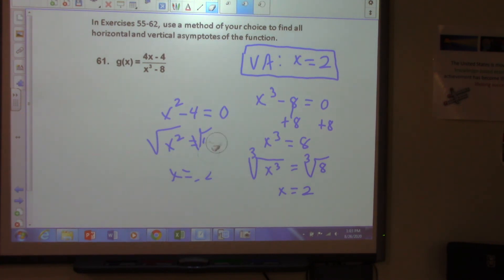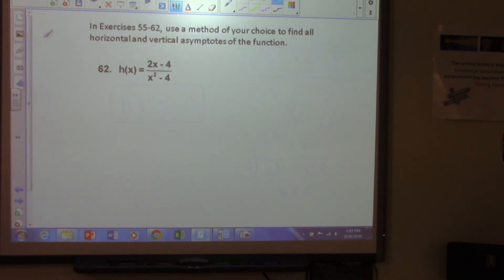Now, what about our horizontal asymptote? Zero. Y equals zero. Y equals zero? Okay. Y equals zero. And why is that? Because bigger on bottom, right? Okay, now we are at 62. So, work on 62.